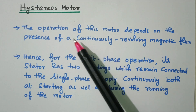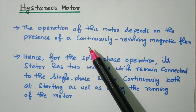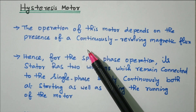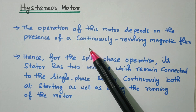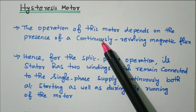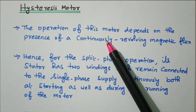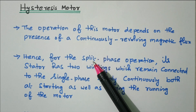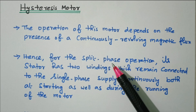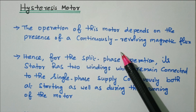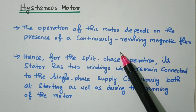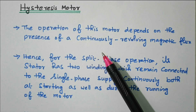Now we'll go to the topic of hysteresis motor. Hysteresis effect is nothing but during magnetization and demagnetization the power will be lost in the form of heat. We already have the hysteresis loop, so there is an energy loss in the form of heat called hysteresis. Based on that, this hysteresis motor is working.